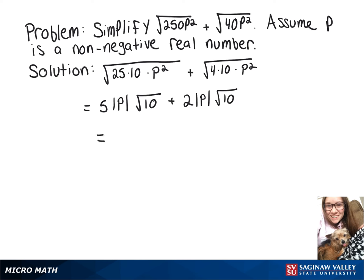Now, since both of these things are being multiplied by the square root of 10, we can add together what's in front, giving us 7 times the absolute value of p times the square root of 10.